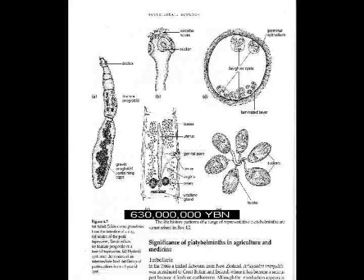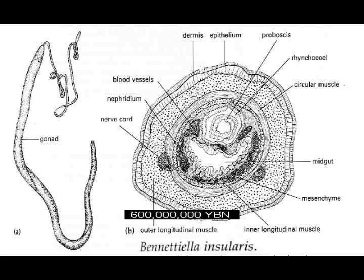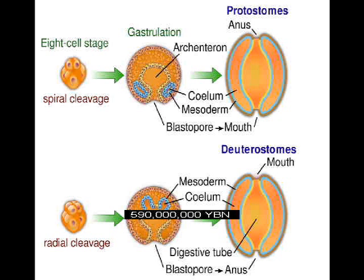Intestine. Vagina, uterus, and genital pore. Penis. Red blood cells and blood vessels. Protostomes: ancestor of all arthropods, brachiopods, and mollusks. Deuterostomes: ancestor of acorn worms, starfish, and all chordates.